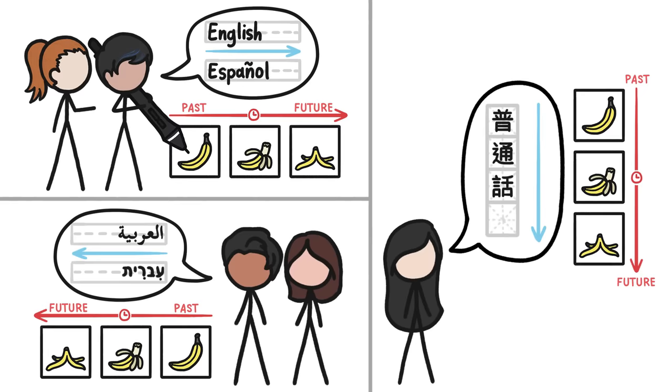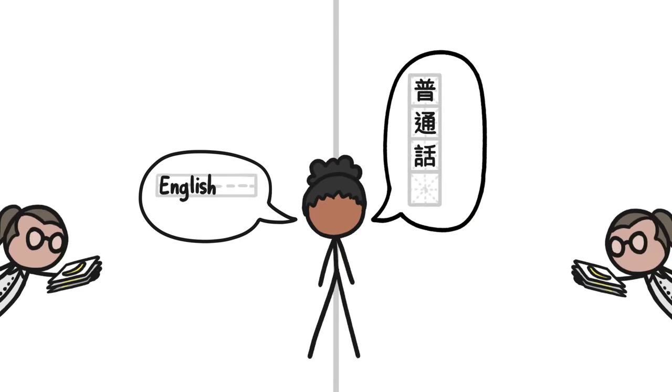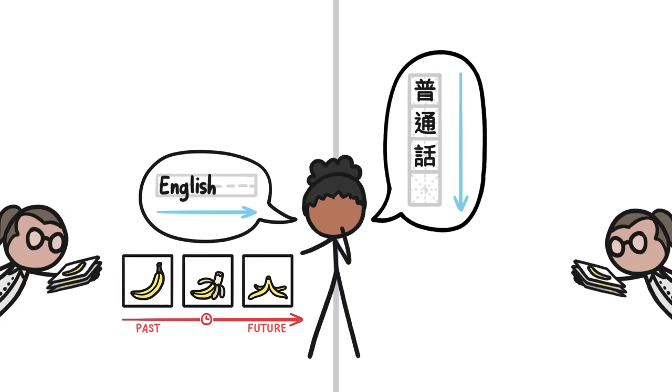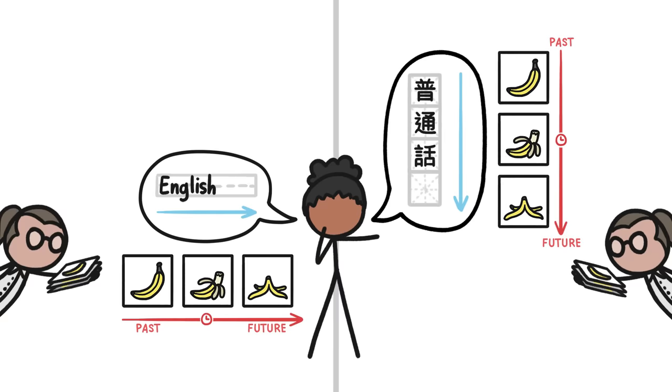Writing direction is so critical to how people represent time that when bilingual speakers take the picture organizing test in languages written in different directions, they often organize the pictures differently depending on the language they're being tested in.